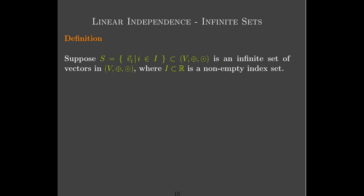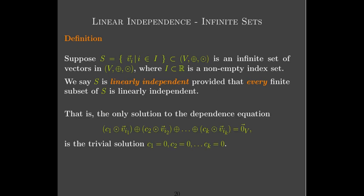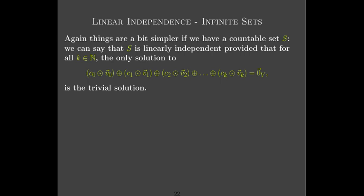Here's our formal definition of linear independence. We have a set with vectors indexed by some index set, which could be real numbers, natural numbers, or some other infinite set. We say it's linearly independent provided every finite subset of S is linearly independent — meaning if you take any finite set of vectors from S, the dependence equation only has the trivial solution. For countable sets this simplifies: S is linearly independent provided that for all natural numbers K, the only solution to the dependence equation when you stop at K is the trivial solution.